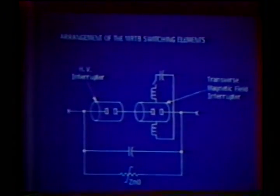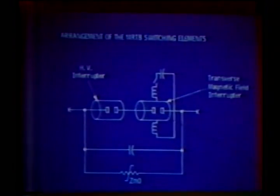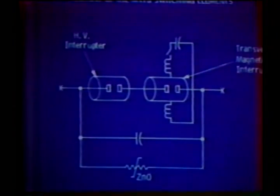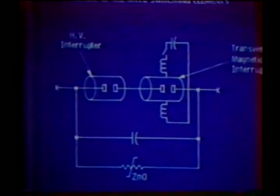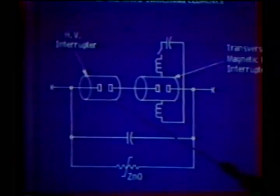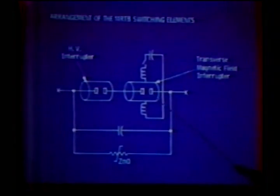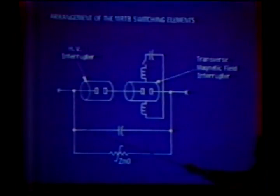For the metallic return transfer breaker, it was necessary to commutate current into a zinc oxide varistor and develop 80 kV across this varistor to drive current from a ground return into a metallic return. The way it was done was to put a high-voltage vacuum interrupter in series with a second interrupter to which a transverse field was rapidly applied. This changed the arc voltage from 20 volts to about 3,000 volts within a few microseconds, and in the presence of a parallel capacitor caused the current to divert into the capacitor. Both gaps then recover and the current is forced to continue flowing into the capacitor and ultimately into the varistor. A photograph of that device is shown here — this is the high-voltage interrupter, this is the commutation mechanism, and here are a couple of magnetic field coils where you apply a transverse field to force arc instability.